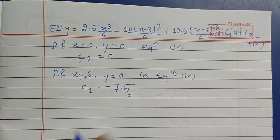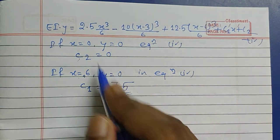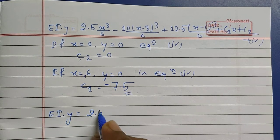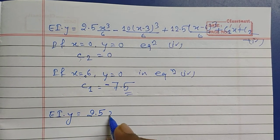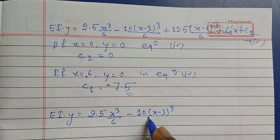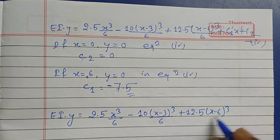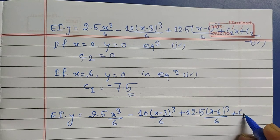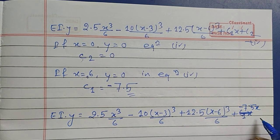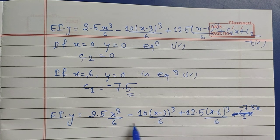With C1 = −7.5 and C2 = 0, we rewrite the deflection equation: EI·y = (2.5x³)/6 − 10(x−3)³/6 + 12.5(x−6)³/6 − 7.5x. This equation is used to find deflection at various points along the beam.